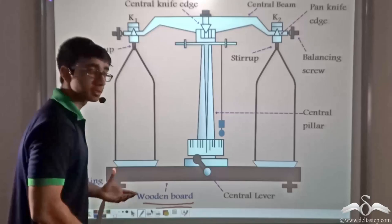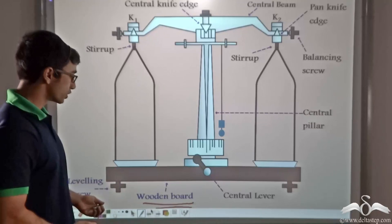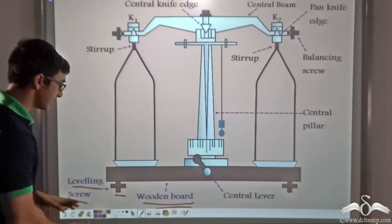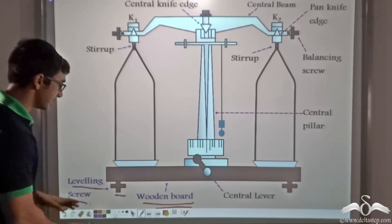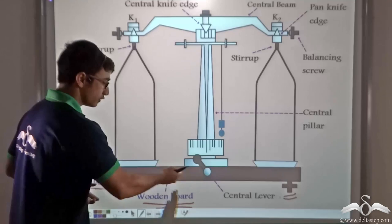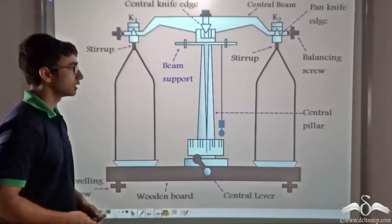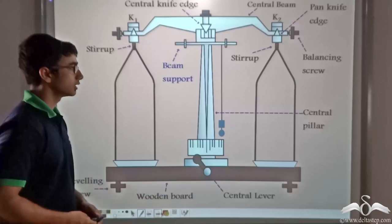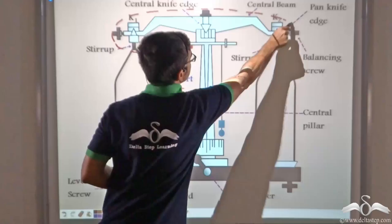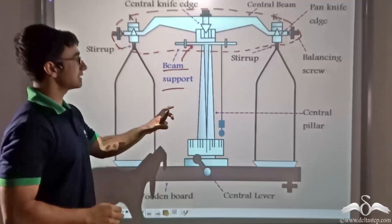We have the wooden board on which the entire arrangement is kept. This wooden board can be adjusted in its height with the help of the leveling screw, which is present on either end of the wooden board. Further, we have the beam support, which is responsible for holding the entire part of the physical balance on the central pillar.